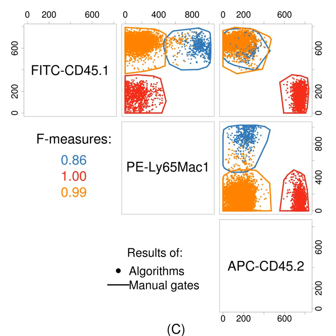Flow cytometry standard was developed in 1984 to allow recording and sharing of flow cytometry data. Since then, FCS became the standard file format supported by all flow cytometry software and hardware vendors. The FCS specification has traditionally been developed and maintained by the International Society for Advancement of Cytometry. Over the years, updates were incorporated with FCS 2.0 introduced in 1990, FCS 3.0 in 1997, and the most current specification FCS 3.1 in 2010. Recently, additional standard file formats have been developed by ISAC.